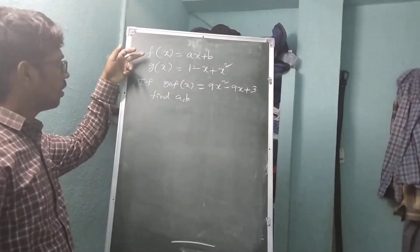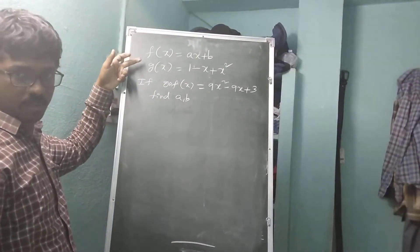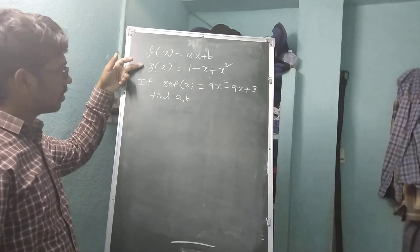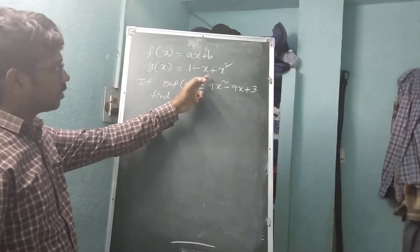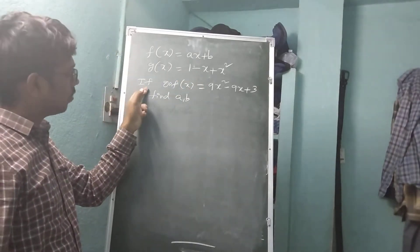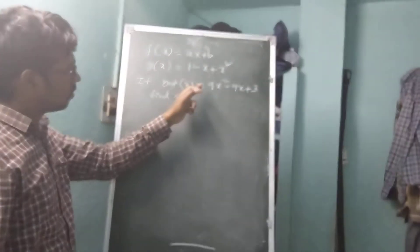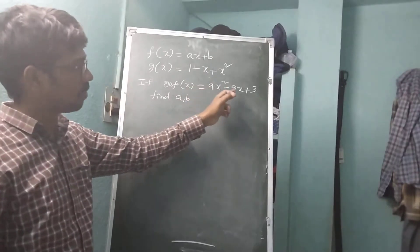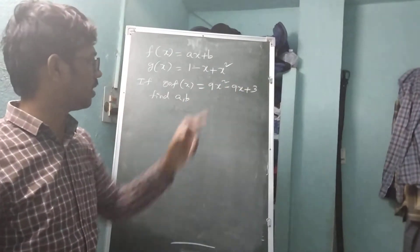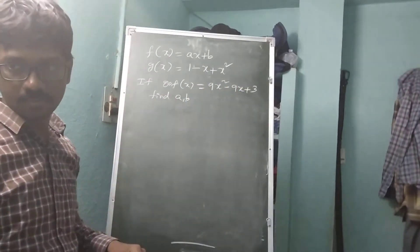If f of x equals ax plus b, and g of x equals 1 minus x plus x squared. Also, if g circle f of x equals 9x squared minus 9x plus 3. Find the values of a and b.